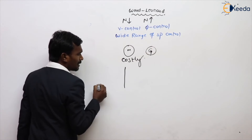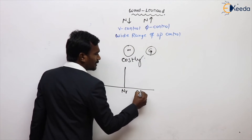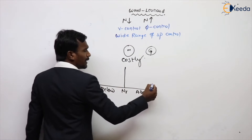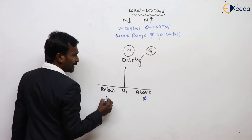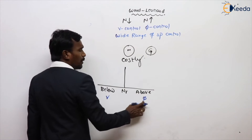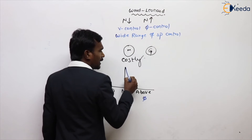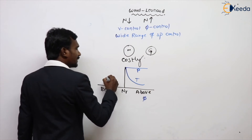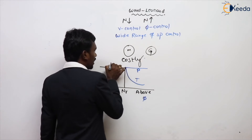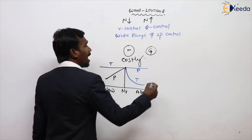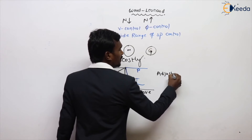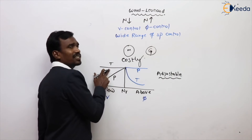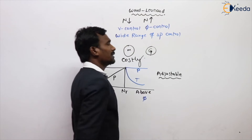Generally, we can see from the graph: this is the rated speed, this is the above rated speed, and this is the below rated speed. For above rated speed, flux control method is used; for below rated speed, voltage control method is used. In above rated speed, torque is variable and power is constant — constant power variable torque drive. For below rated speed, power is variable and torque is constant. So Ward-Leonard control is an adjustable drive — constant power variable torque and variable power constant torque — both below rated and above rated speeds are possible.